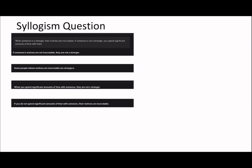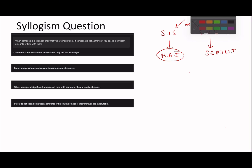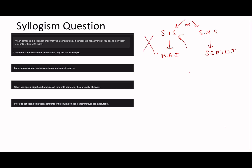Next question: 'When someone is a stranger their motives are inscrutable. If someone is not a stranger you spend a significant amount of time with them.' So: 'If someone's motives are not inscrutable they are not a stranger.' If you think about it, you're either a stranger or you're not. If your motives are not inscrutable, you can't be on the stranger side, so you must be on the other side — they must not be a stranger. That's why this one is yes; you can trace and follow it around.